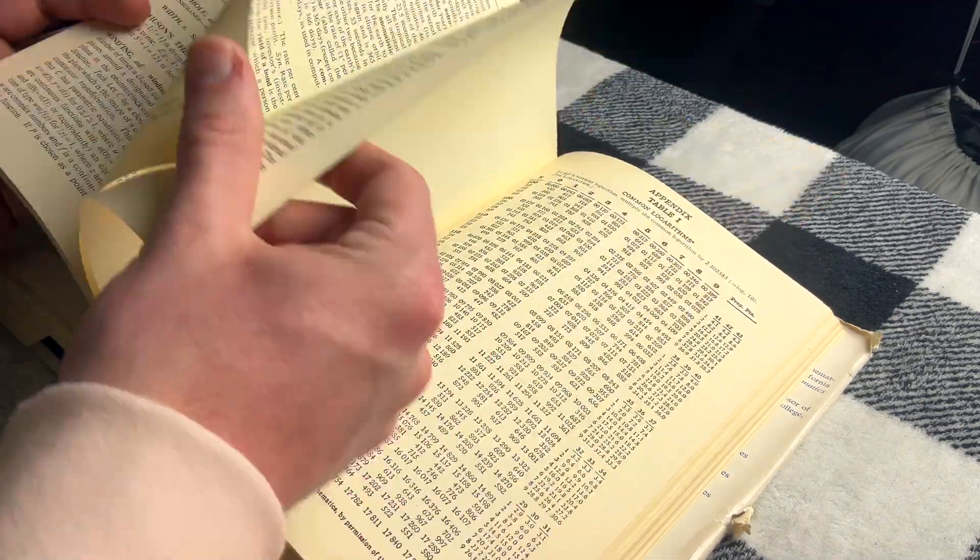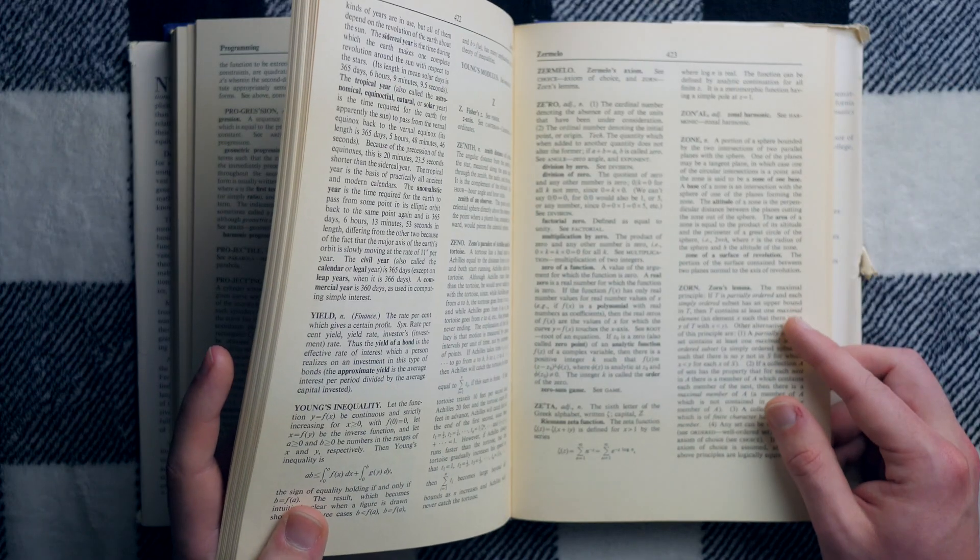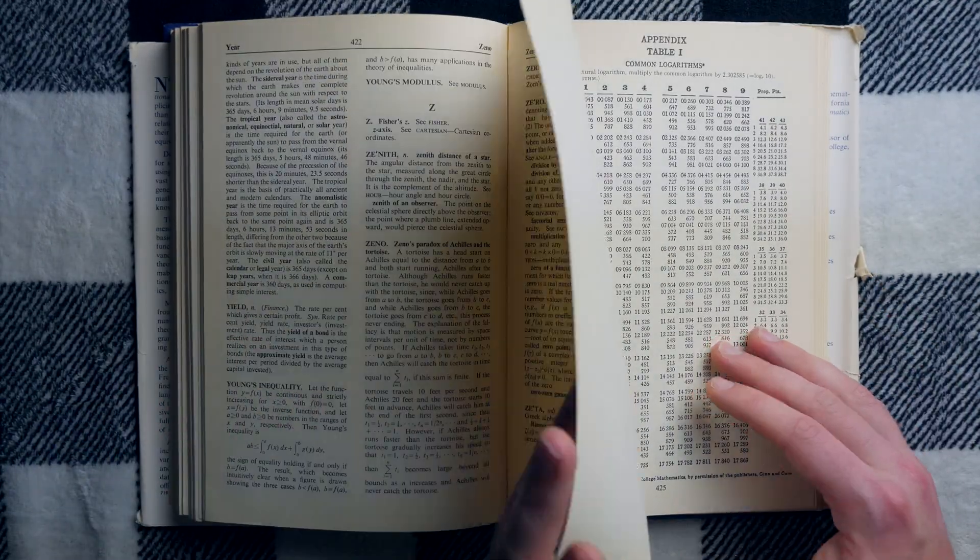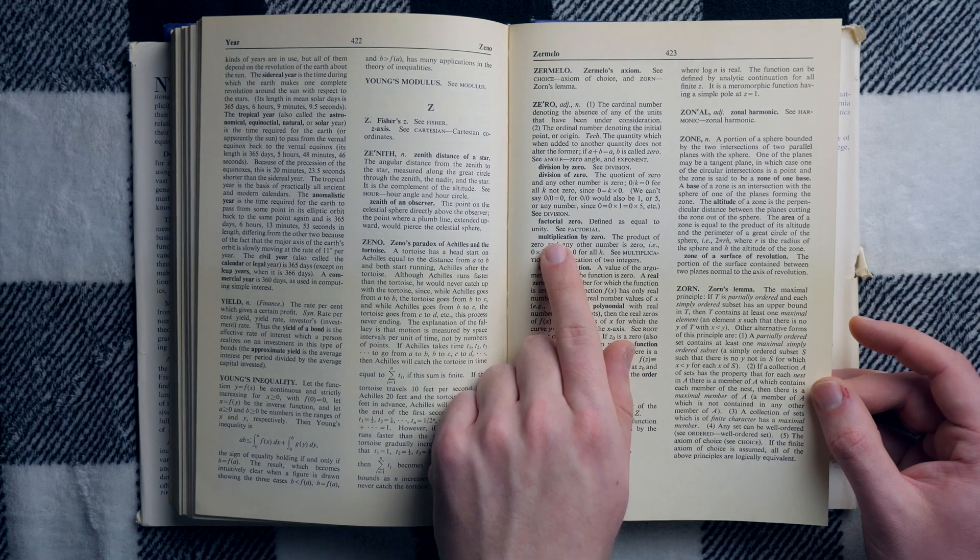What's the last word, just out of curiosity? Zorn, ah, I probably could have guessed that if you gave me some time. Zorn's lemma. Factorial zero. So, defined is equal to unity. Cool.